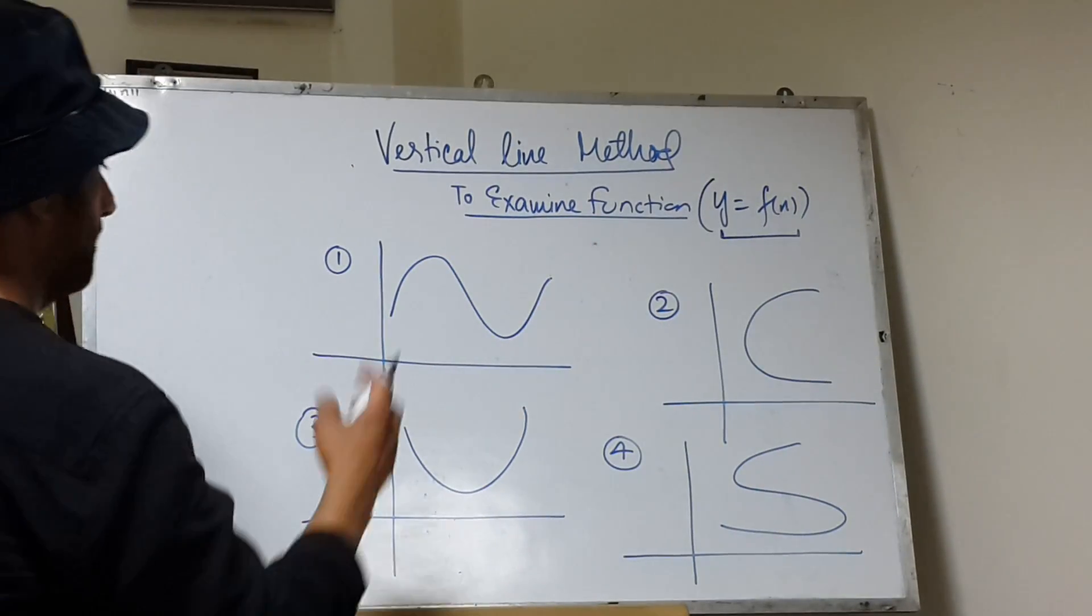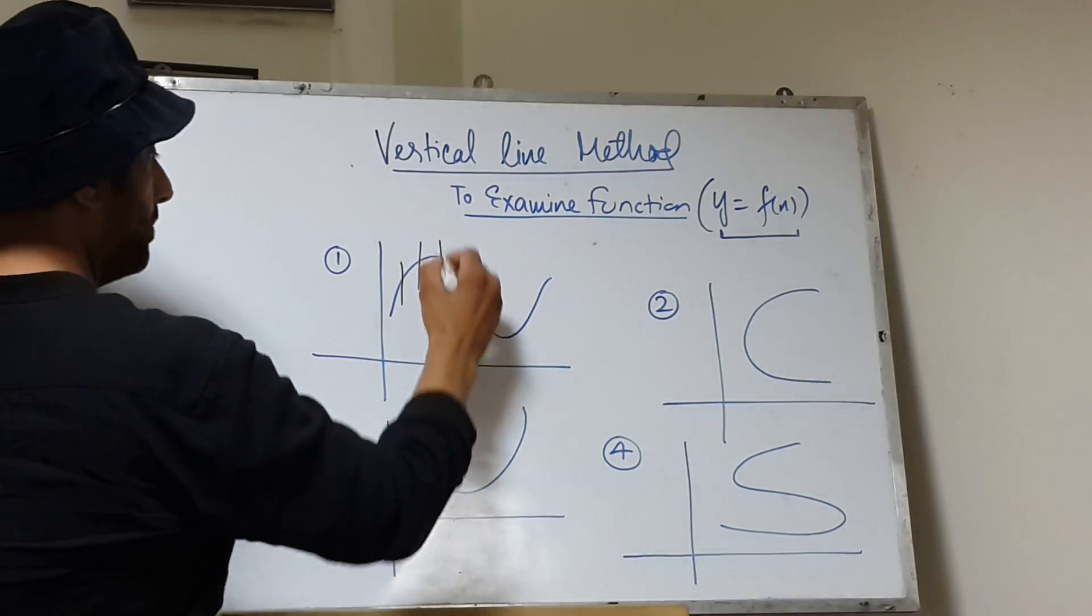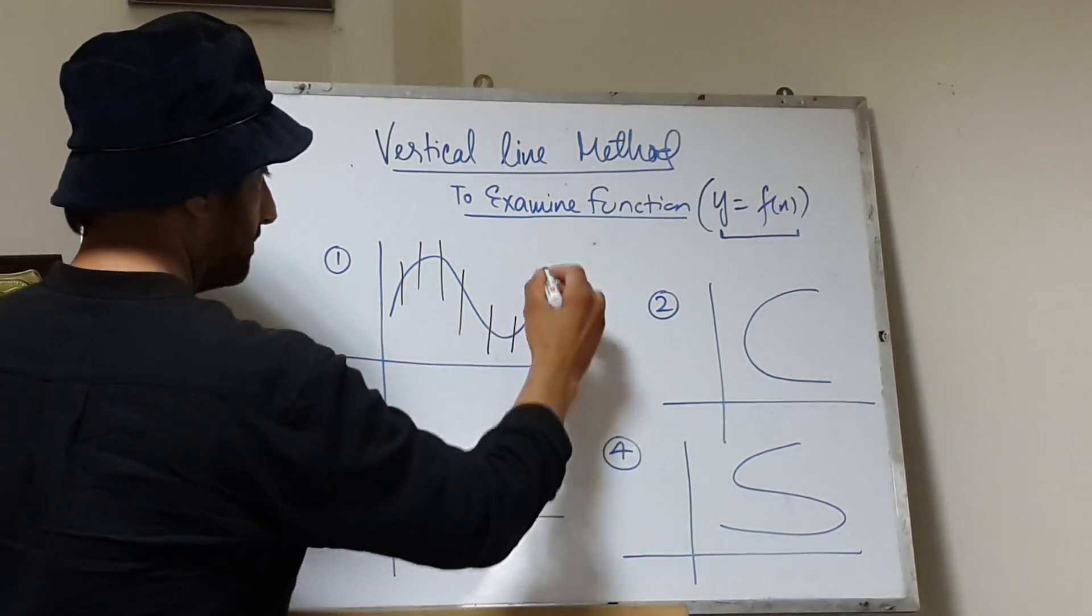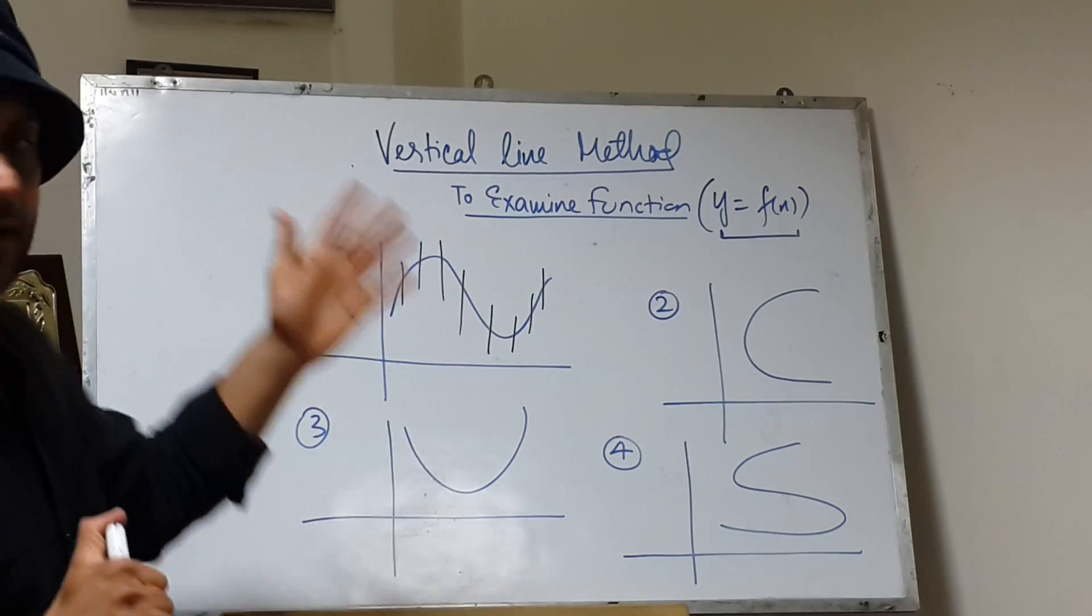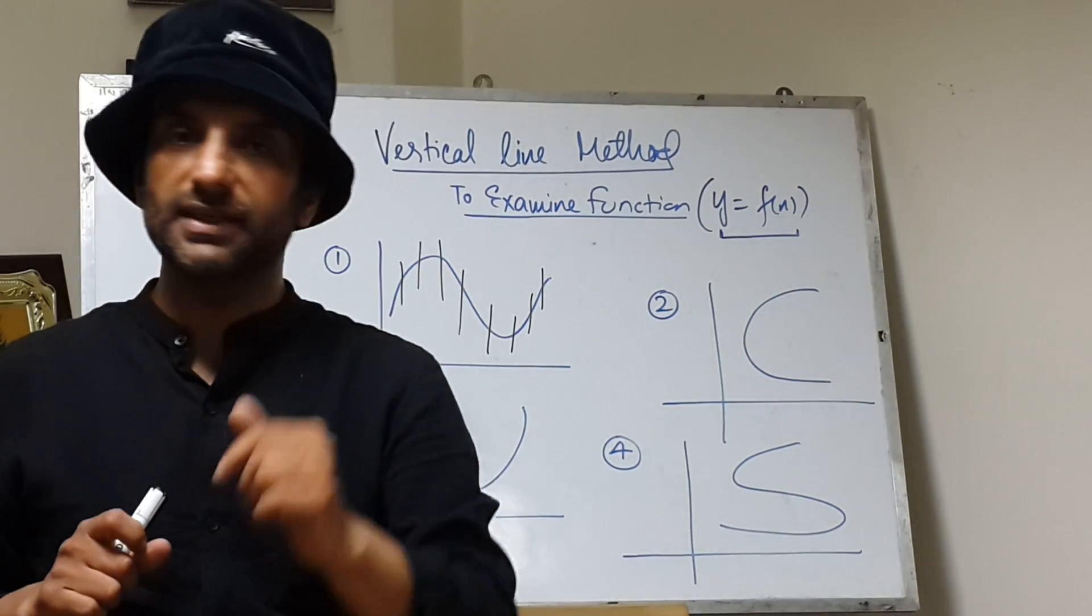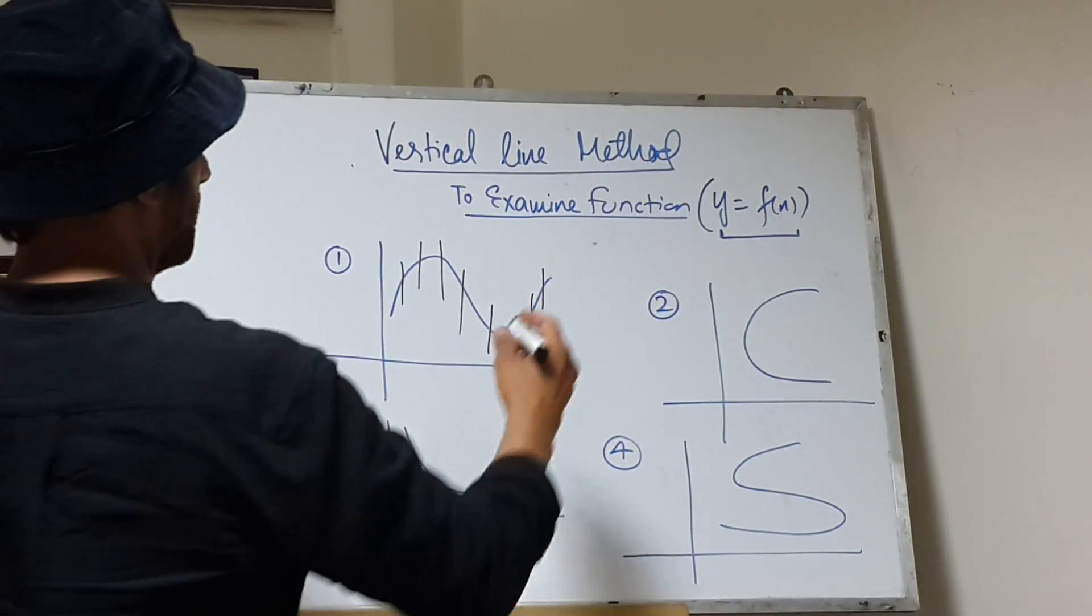I'm taking you to the first curve. Here, when we keep on plotting the vertical lines, one can observe that all the lines are cutting the curve at only one point.